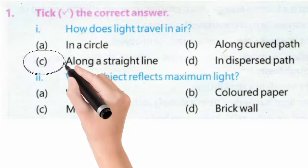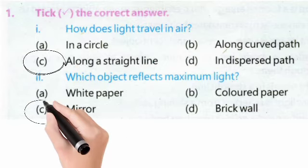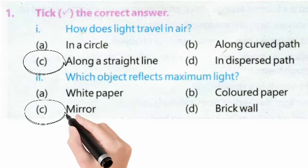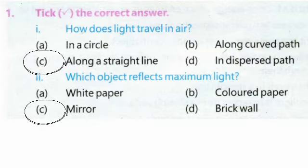Question 2: Which object reflects maximum light? (کون سا object سب سے زیادہ روشنی reflect کرتا ہے؟) Options: a) white paper, b) colored paper, c) mirror, d) brick wall. Correct option is C — mirror.